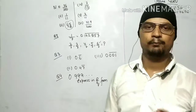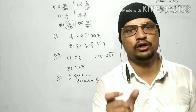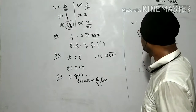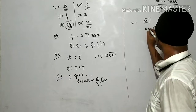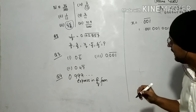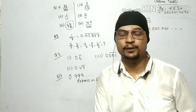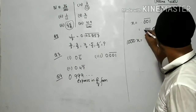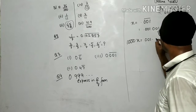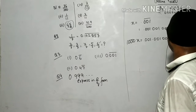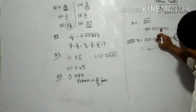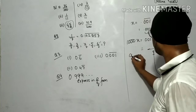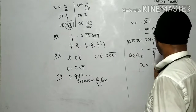For 0.0̄0̄1̄, three digits are repeating (001), so we multiply x by 1000 instead of 10. Let x = 0.001001001... Multiplying by 1000: 1000x = 1.001001001... Subtracting: 1000x − x = 999x. The decimal parts cancel completely. What remains: 1 on the right side. So x = 1 upon 999.